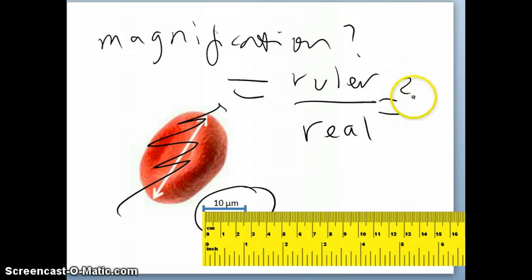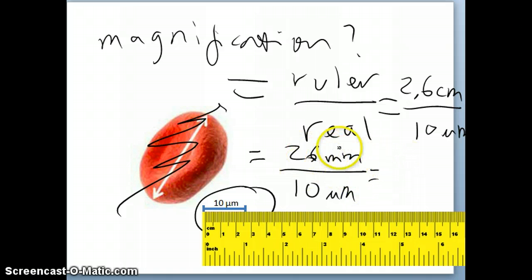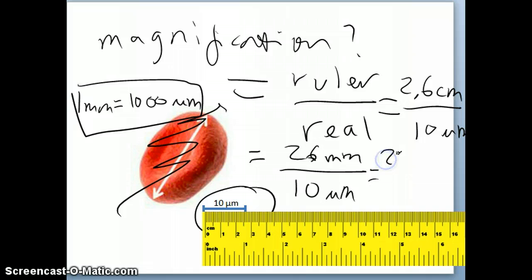So, that would equal 2.6 centimeter divided by 10 micrometer. So, that will equal to, or 2.6 centimeter is 26 millimeter divided by 10 micrometer. And then 26 millimeter. Just commit to memory that 1 millimeter is equal to 1000 micrometer.